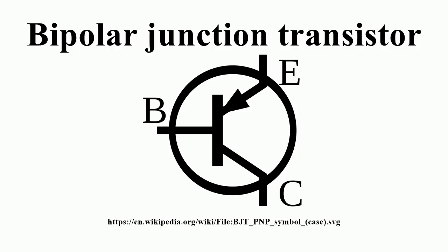A BJT consists of three differently doped semiconductor regions: the emitter region, the base region, and the collector region. These regions are, respectively, P-type, N-type, and P-type in a PNP transistor, and N-type, P-type, and N-type in an NPN transistor. Each semiconductor region is connected to a terminal, appropriately labeled emitter, base, and collector.